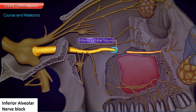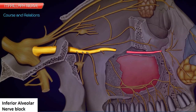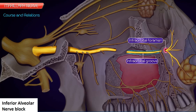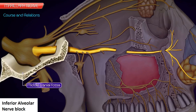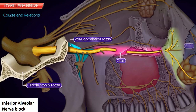Hence it is called the infraorbital nerve. The infraorbital nerve, in fact a continuation of the maxillary nerve, runs forwards along the floor of the orbit in the infraorbital groove and appears on the face through the infraorbital foramen. In its course, the maxillary nerve traverses four regions in succession: the middle cranial fossa, the pterygopalatine fossa, the orbit, and the face.